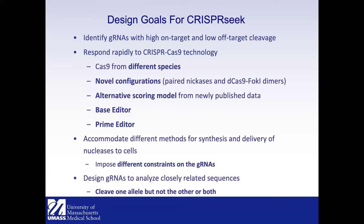CRISPRseek also allows you to impose different constraints on guides — for example, some synthesis systems require the first base not to be G. It also allows designing guides to distinguish closely related sequences, such as targeting a diseased allele but not the healthy one, or targeting both sequences simultaneously. There are two main functions: off-target analysis and compare-two-sequences.